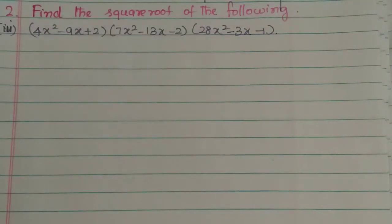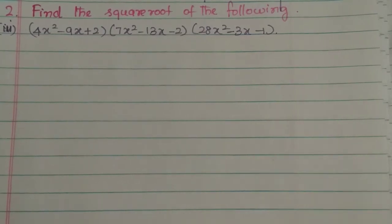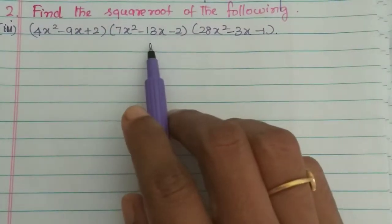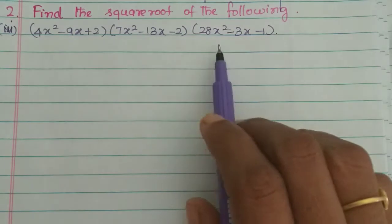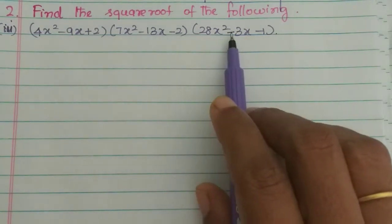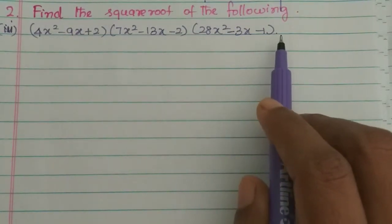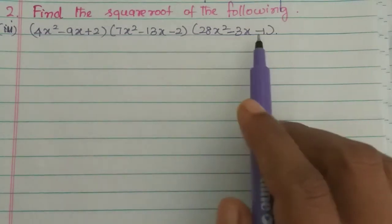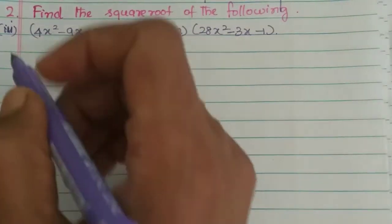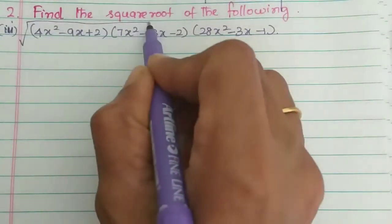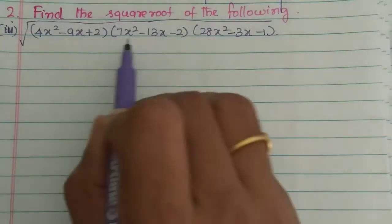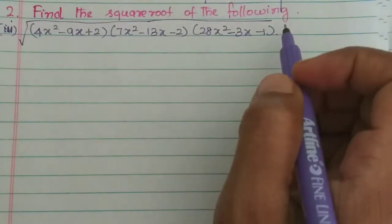Hi students, in this video we will see the third subdivision. The expression is 4x²-9x² into 7x²-13x-2 into 28x²-3x-1. So now we have 3 expressions under the square root. These are quadratic expressions.